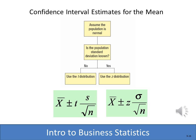Here's a flowchart to help decide whether to use t or z. It essentially comes down to: do we know the population standard deviation? If yes, use the z distribution. If no, use the t. It's that simple.